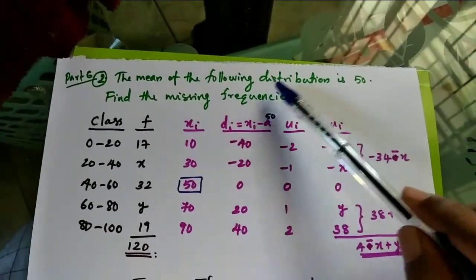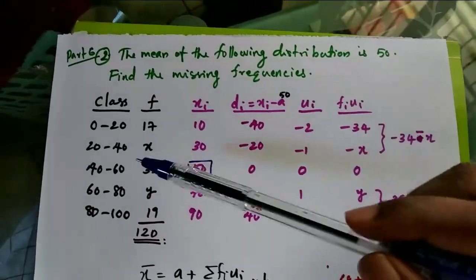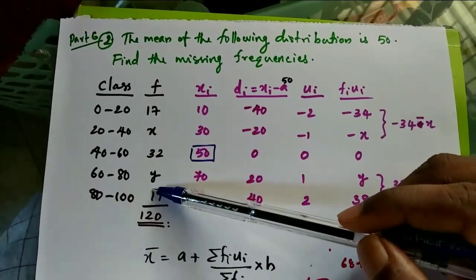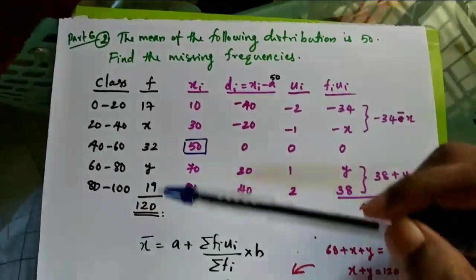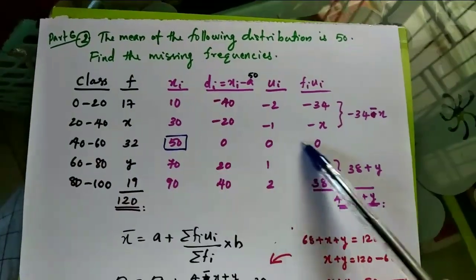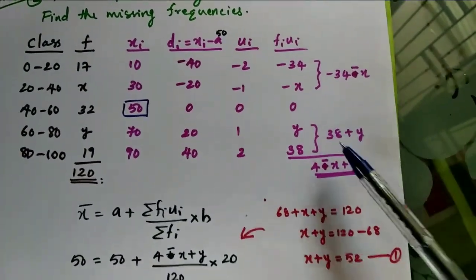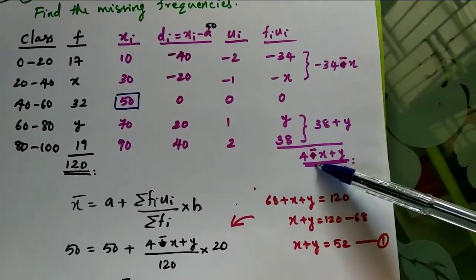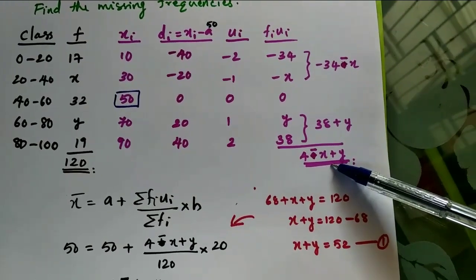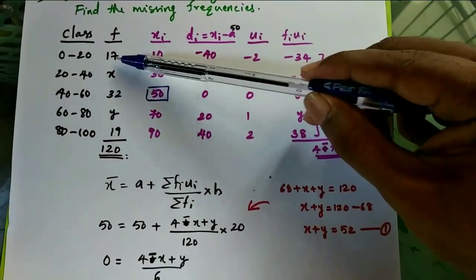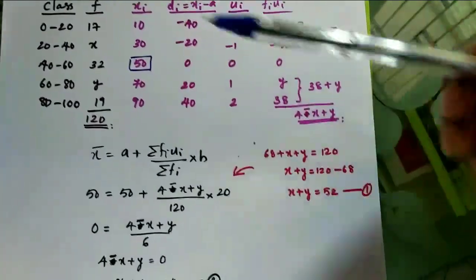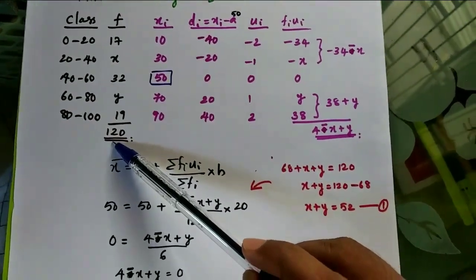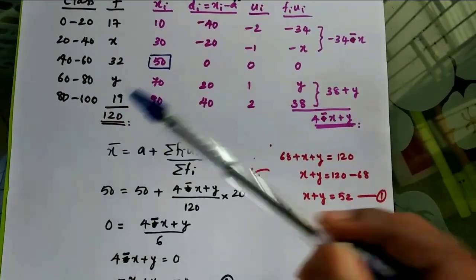Here is another question where the mean of the distribution is given as 50, but this time two numbers are missing: x and y. Computing the fi·ui column gives: minus 34, minus x, then 38 plus y, combining to give minus 34 plus 38 equals 4, so sigma(fi·ui) equals 4 minus x plus y. Adding the frequencies: 17 plus 32 plus 19 equals 68, and x plus y is missing, so x plus y equals 120 minus 68 equals 52. This is equation number 1.